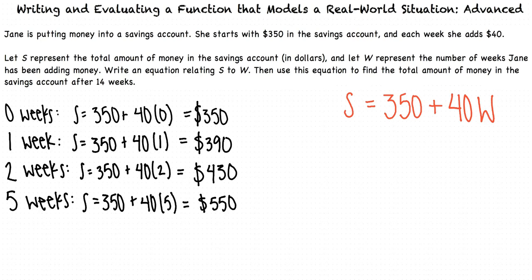To find the total amount of money after 14 weeks, we set W equal to 14. So, after 14 weeks, the total amount of money will be S equals 350 plus 40 times 14, and when we simplify this, we get S equals 910. This tells us that after 14 weeks, Jane has $910 in her savings account.